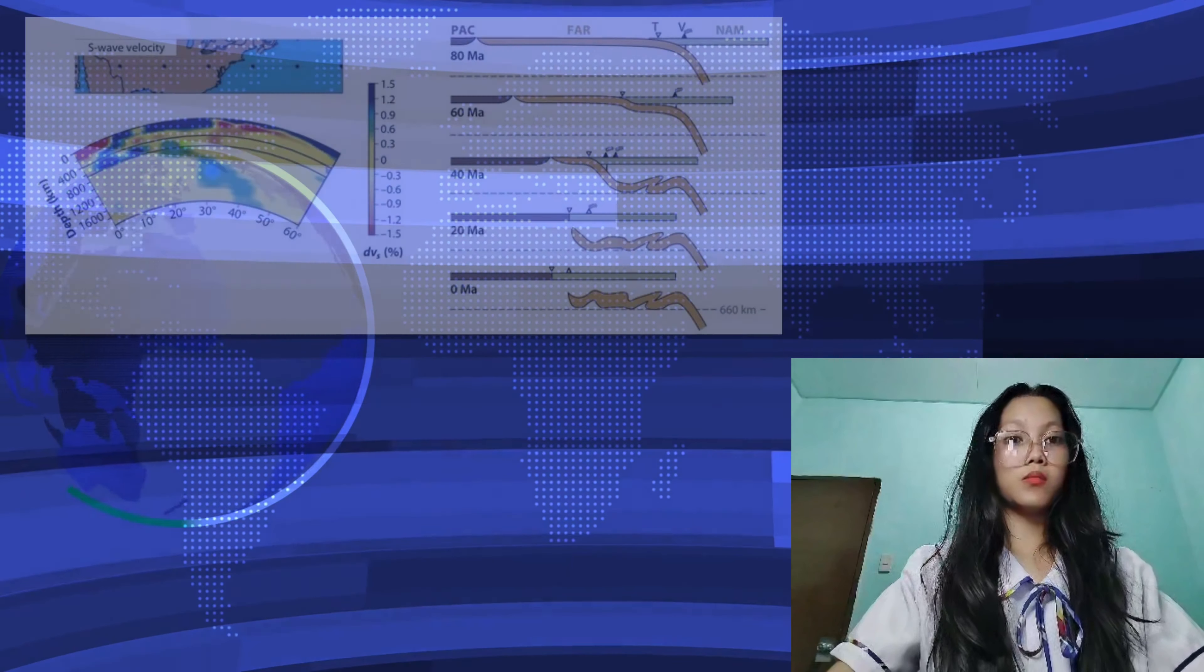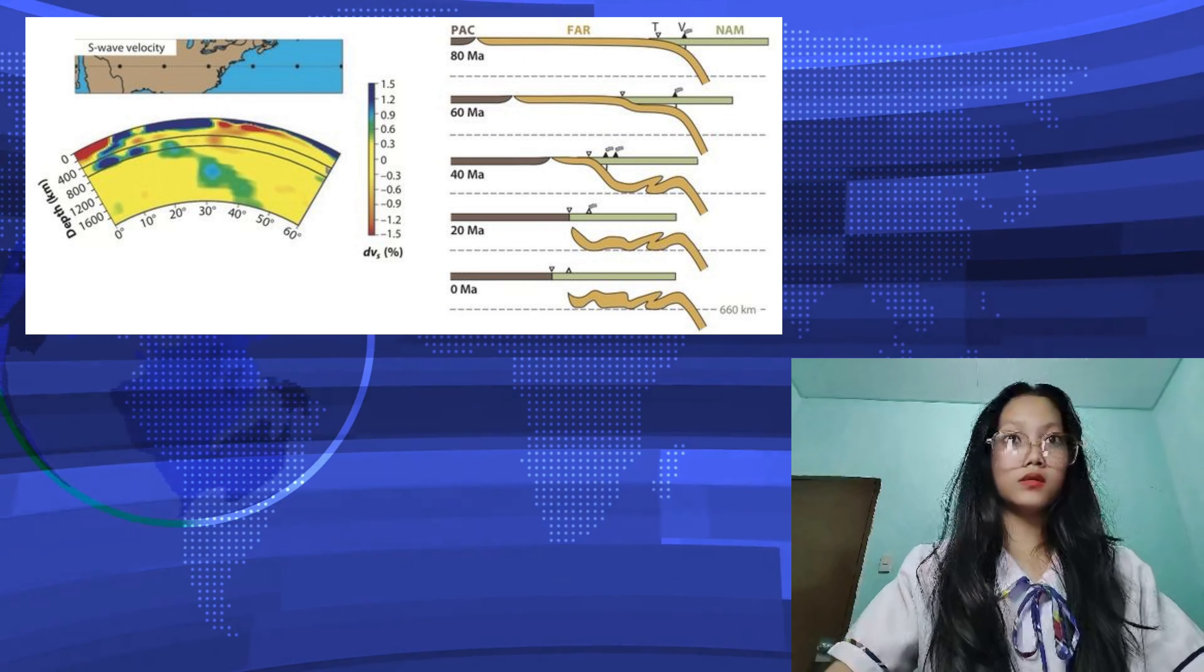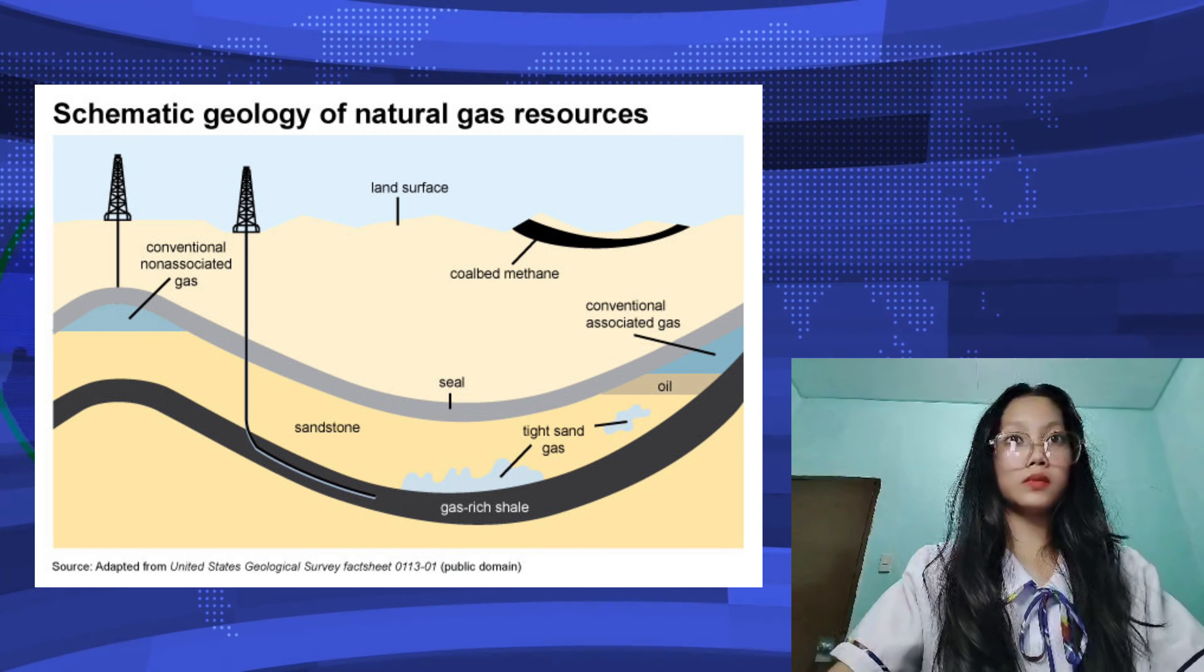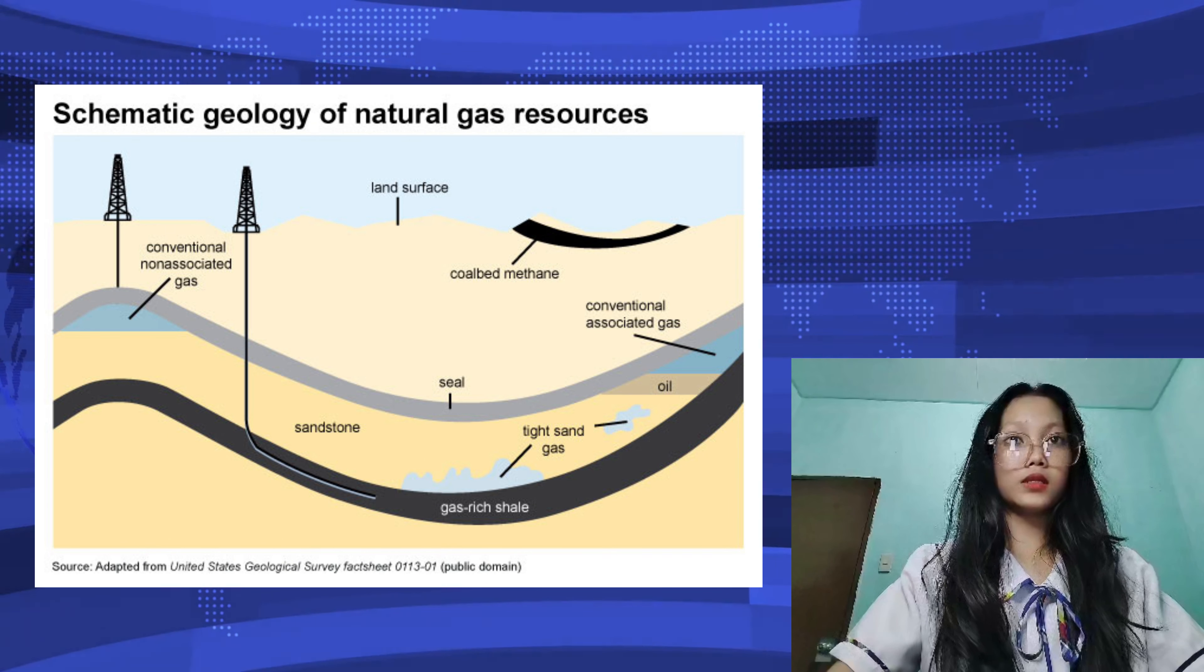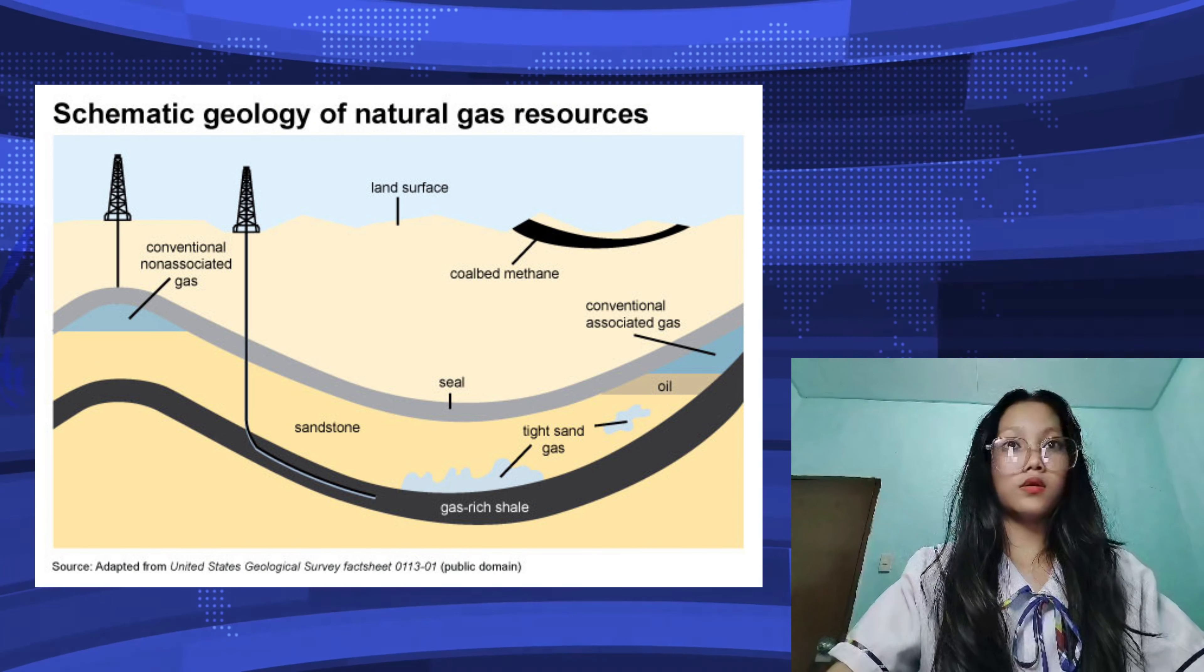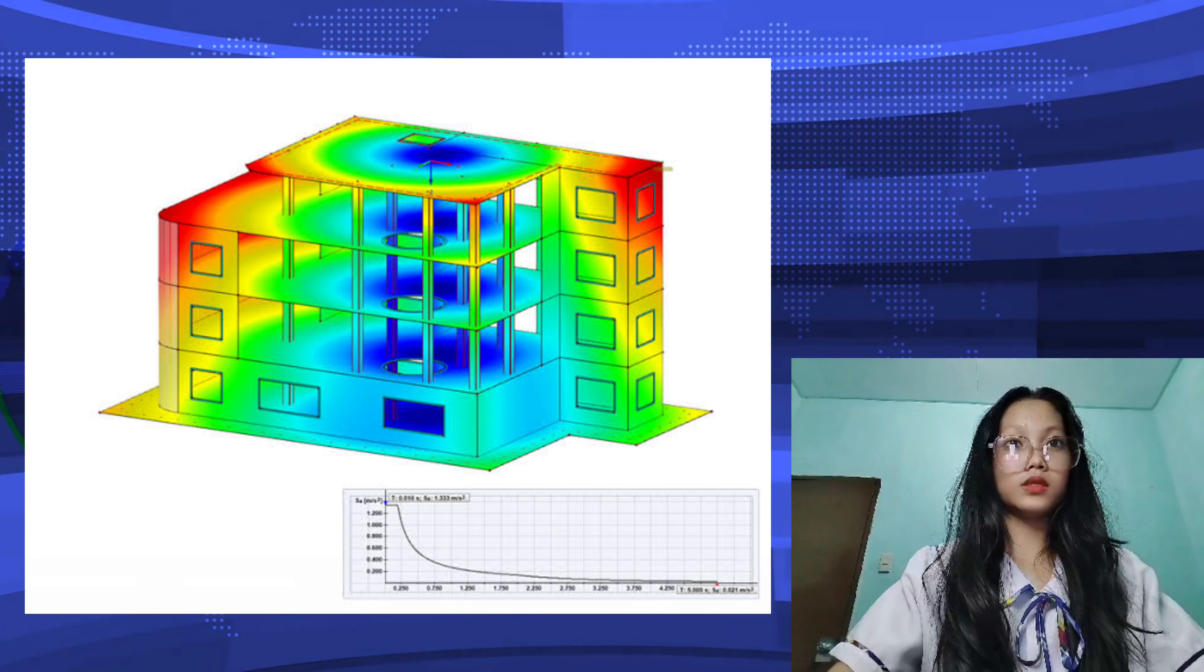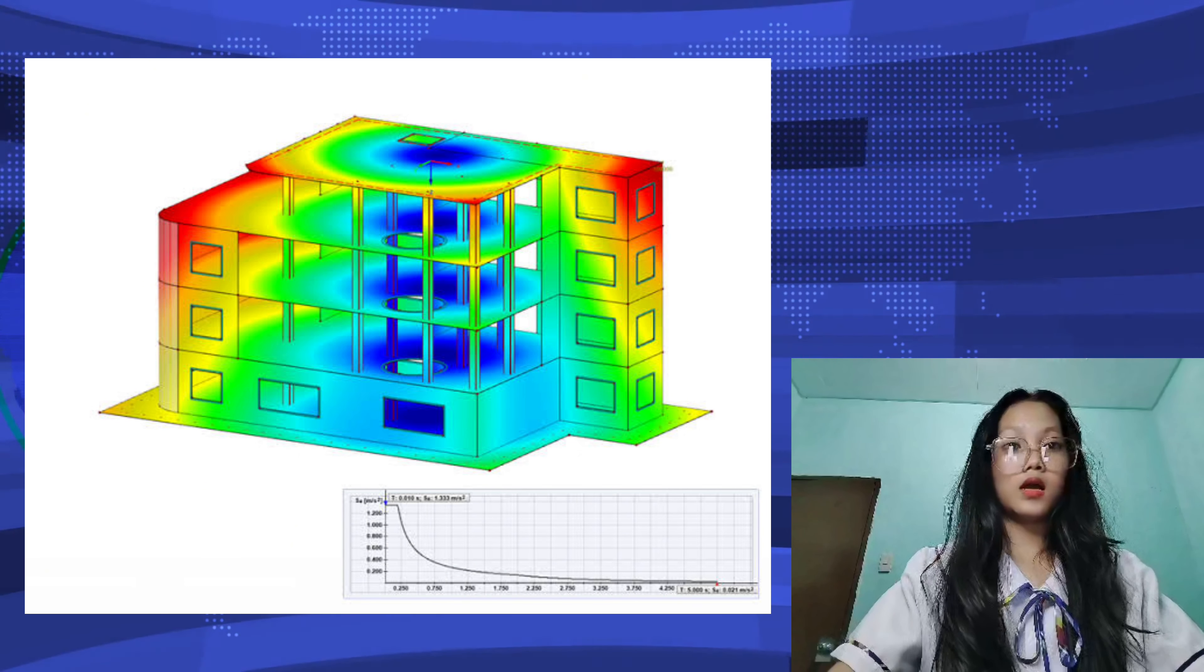Seismic waves have several practical applications. They are used in seismic tomography, which helps scientists create detailed images of the earth's interior. This technique is similar to how doctors use x-rays to see inside the body. Seismic waves are also crucial in the oil and gas industry, where they help locate natural resources by mapping underground rock formations. Additionally, engineers use seismic data to design buildings and structures that can withstand earthquakes, improving safety.